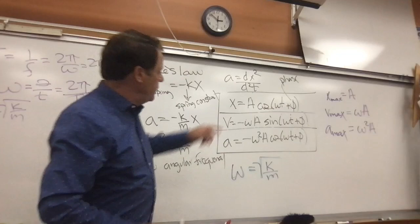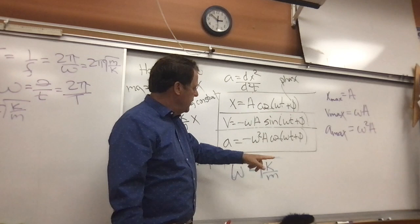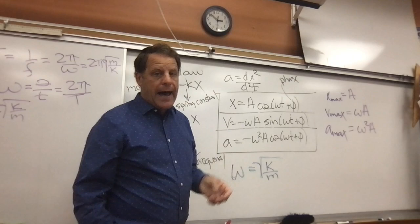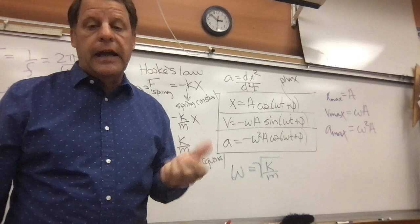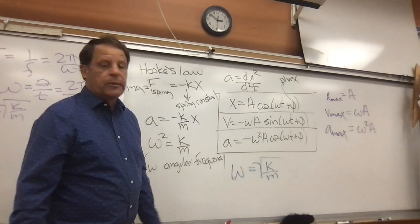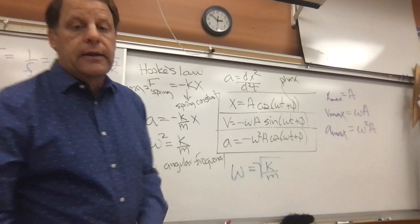This is actually going to give us a lot of information, because the greatest value that we can have for a cosine or sine is going to be 1. So if we want the maximum, our maximum x is going to be our amplitude. Our maximum velocity is going to be equal to omega times A.